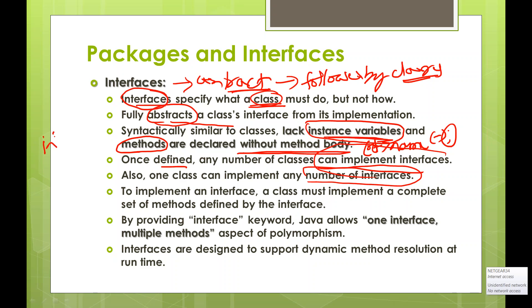In inheritance, a particular class can inherit only one super class — a child class can inherit only one parent class. But here, a class can implement any number of interfaces, not just one interface.